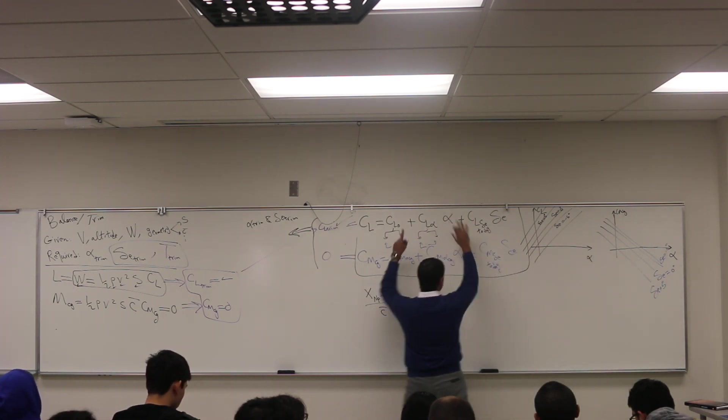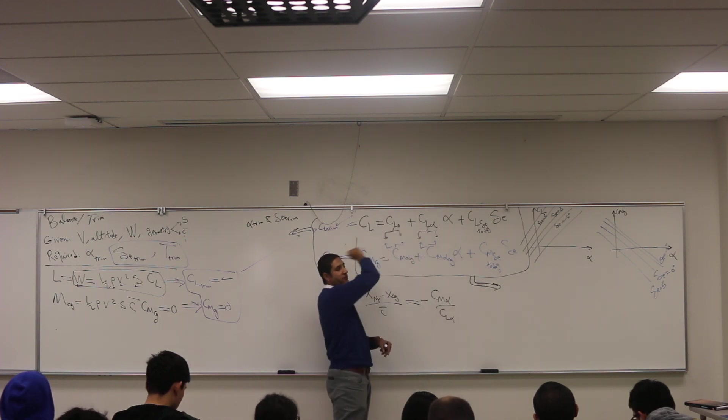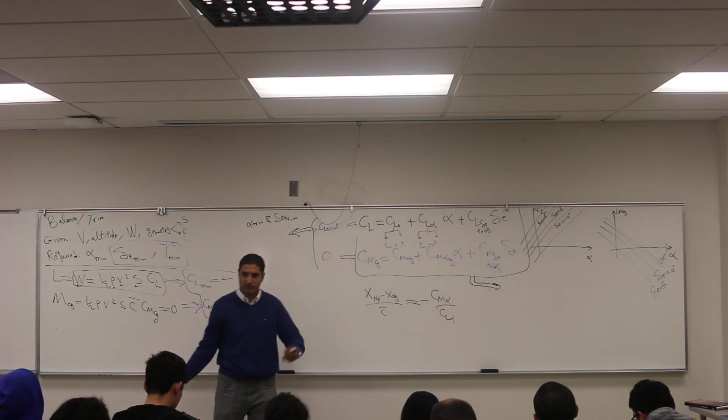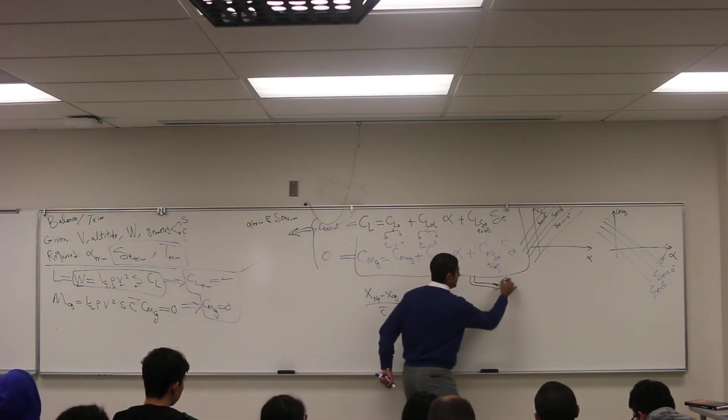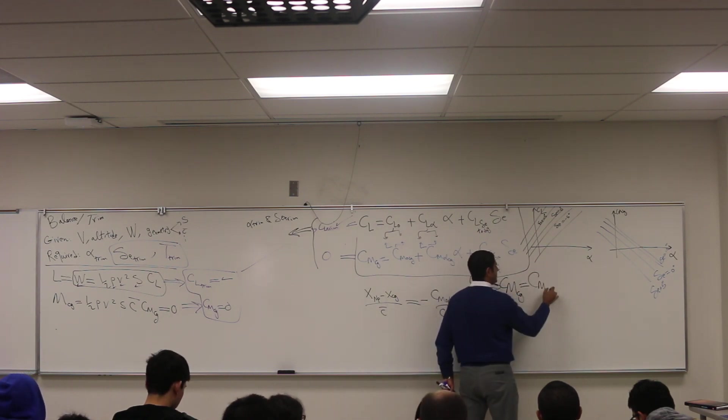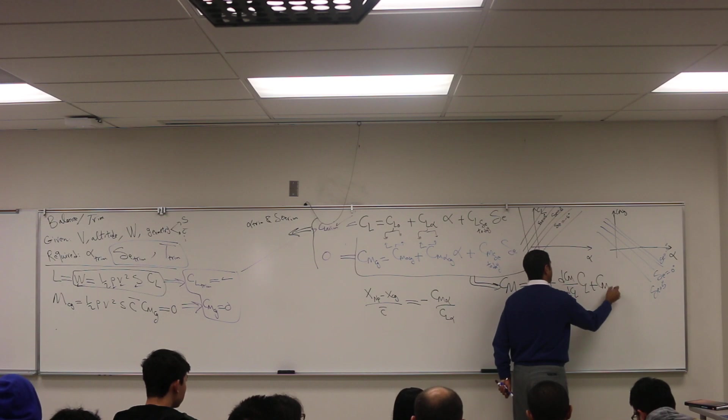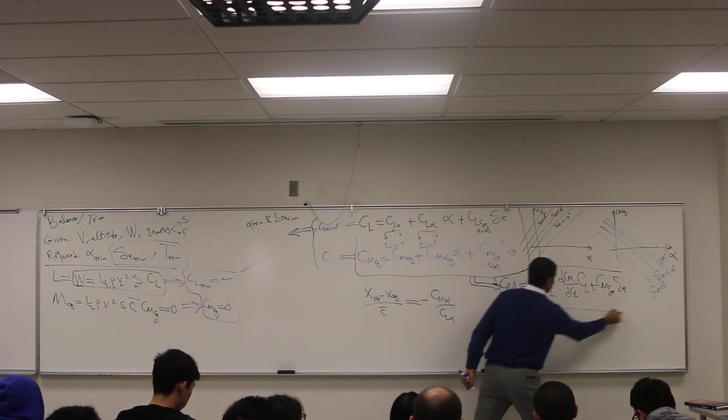So these two equations, I can manipulate them and just get alpha from one equation and put it into the other. You can write it as CM equals CM_zero_lift plus dCM/dCL times CL plus CM_delta_elevator times delta elevator. So this equation represents the two equations lumped together.